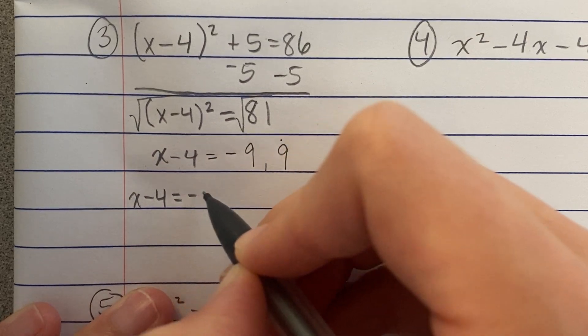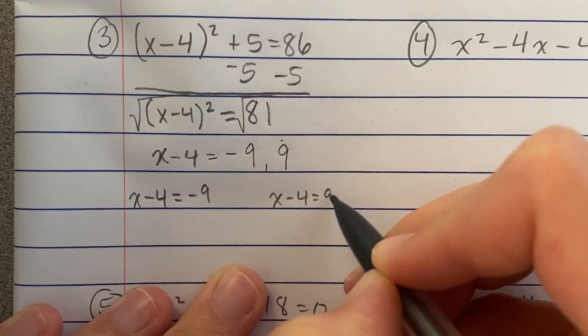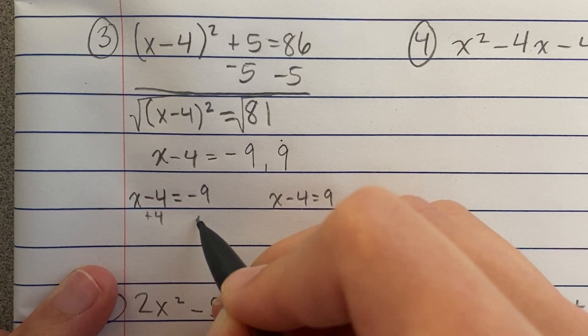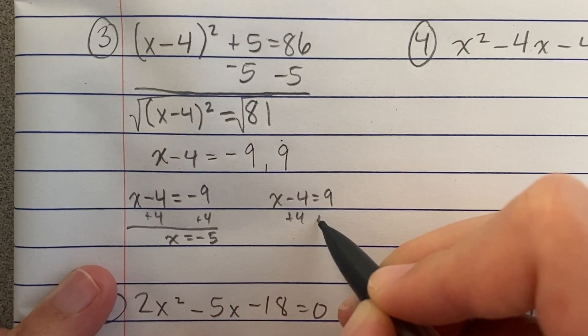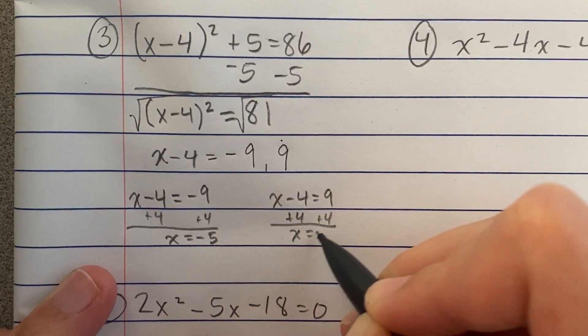So, then I'm left with two equations. And in both cases, I'm going to add 4 to both sides. Here, I get x equals negative 5. And here, I get x equals 13.